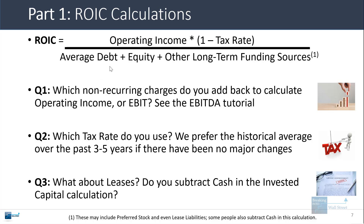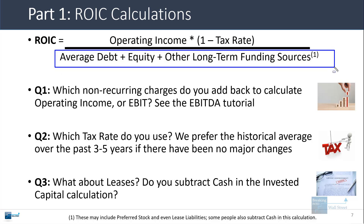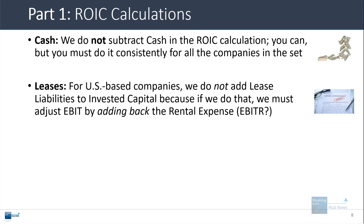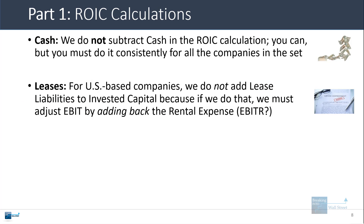We get a lot of questions about invested capital — what about leases, what about cash? Some people subtract cash in this calculation. Our short answer is that we tend not to subtract cash in the ROIC calculation. You can do it, but you need to apply it consistently for all companies in your set. We don't like doing it because it can artificially inflate ROIC numbers. With leases, if it's a US-based company, we prefer not to add lease liabilities to invested capital because then we'd have to adjust EBIT by adding back the rental expense — this adds extra work without necessarily improving things.